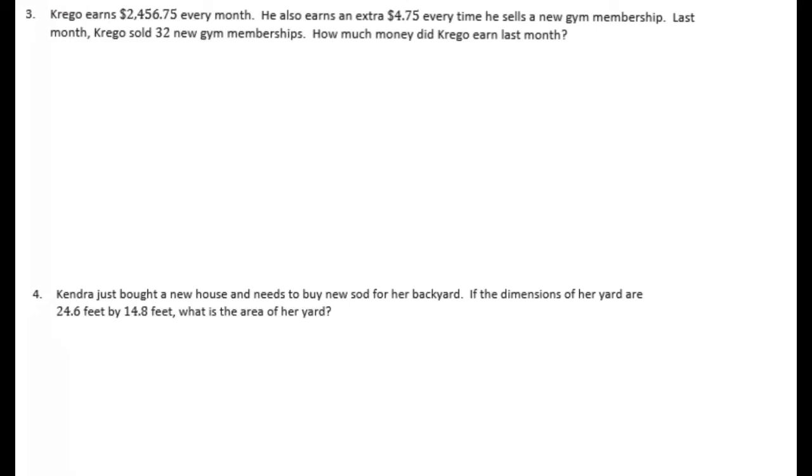Number 3. Crigo earns $2,456.75 every month. He also earns an extra $4.75 every time he sells a new gym membership. Last month, Crigo sold 32 new gym memberships. How much did he earn last month? He earns a flat rate of $2,456.75 every month, but he gets an extra $4.75 for a new gym membership, and last month he got 32. So let's see how much he made off of gym memberships. 475 times 32.